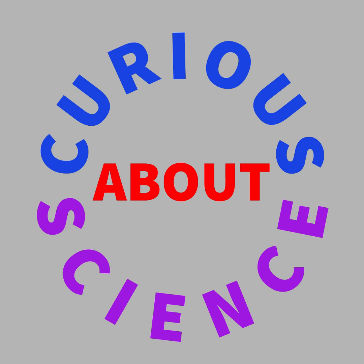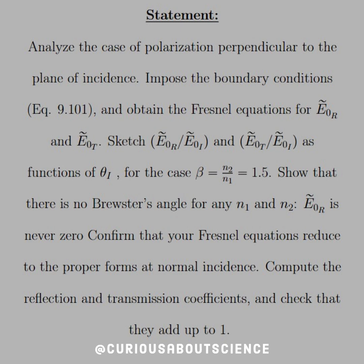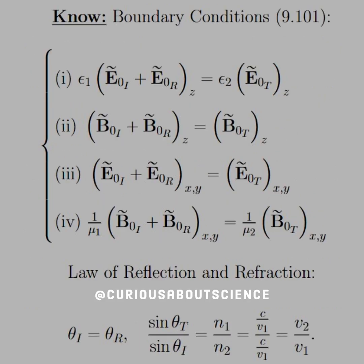Oh boy, do we have a fun question here. Definitely a long question, so I'm just going to dive right in. The statement is: analyze the case of the polarization perpendicular to the plane of incidence. Impose the boundary conditions listed by equation 9.101 and obtain the Fresnel equations for E0R and E0T. Sketch the ratio of R and I and T and I as a function of theta I. For the case of beta equal N2 over N1 equal 1.5, show that there is no Brewster angle for any N1 and N2 and that E0R is never 0. Confirm that your Fresnel equation is reduced to the proper forms at normal incidence. Compute the reflection and transmission coefficients and check that they add up to 1. Okay, busy, busy, but I don't think anything is going to scare us.